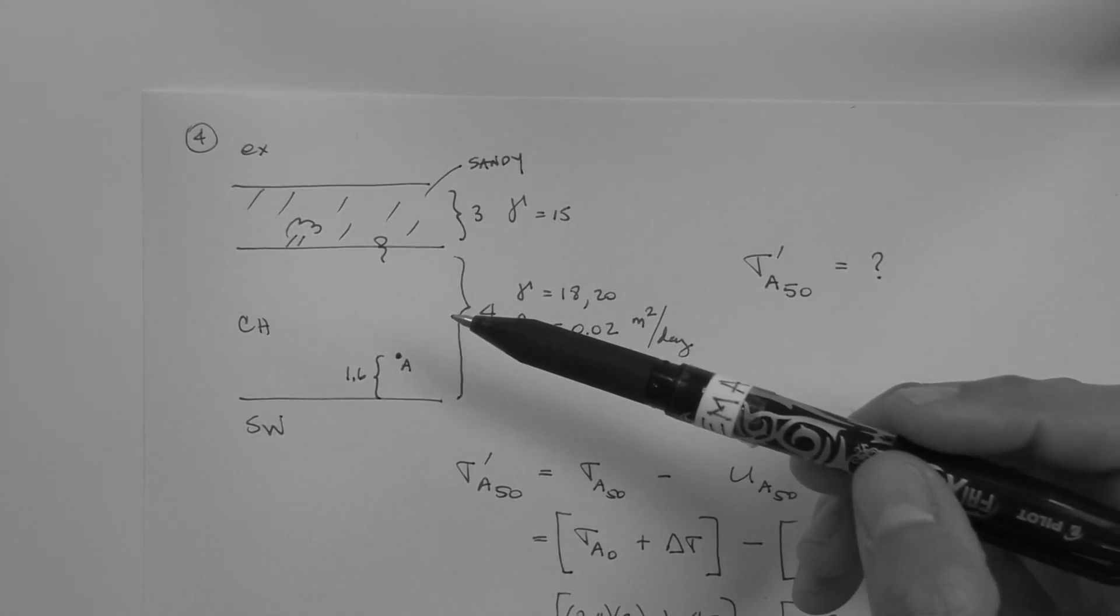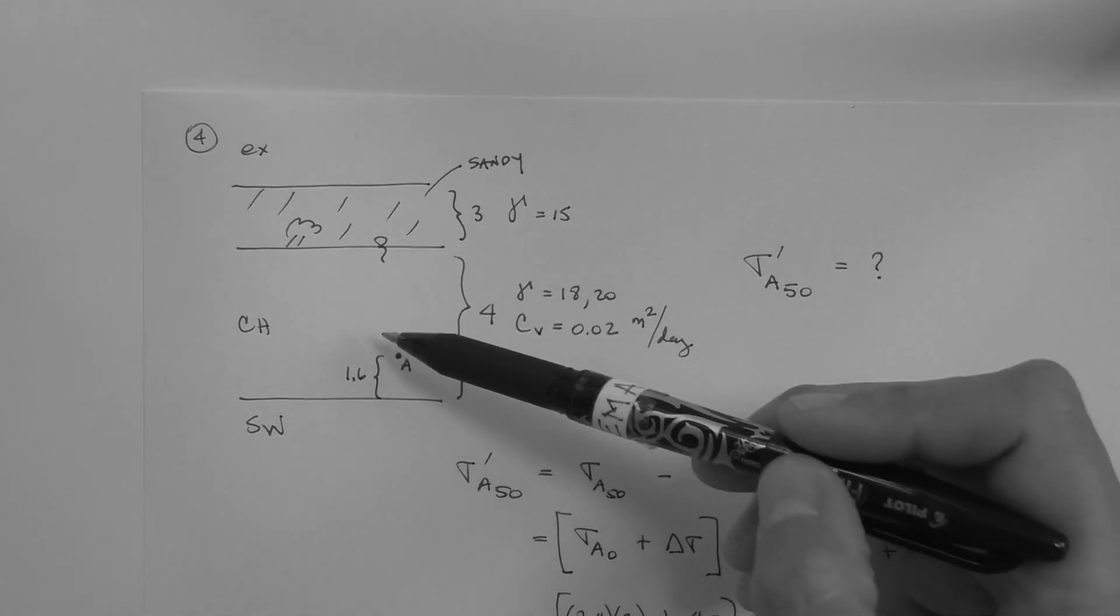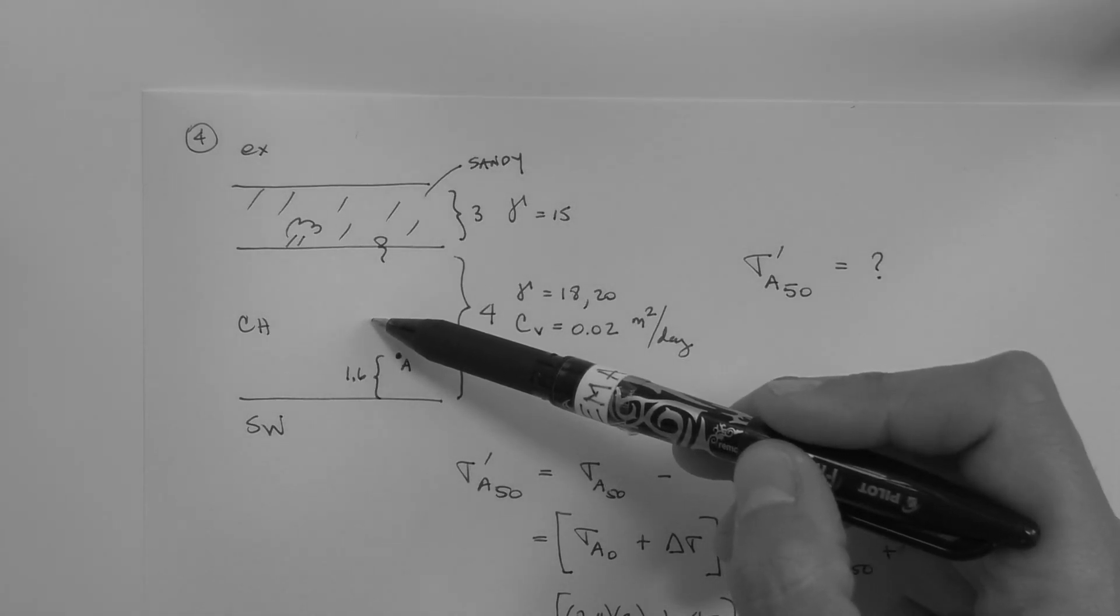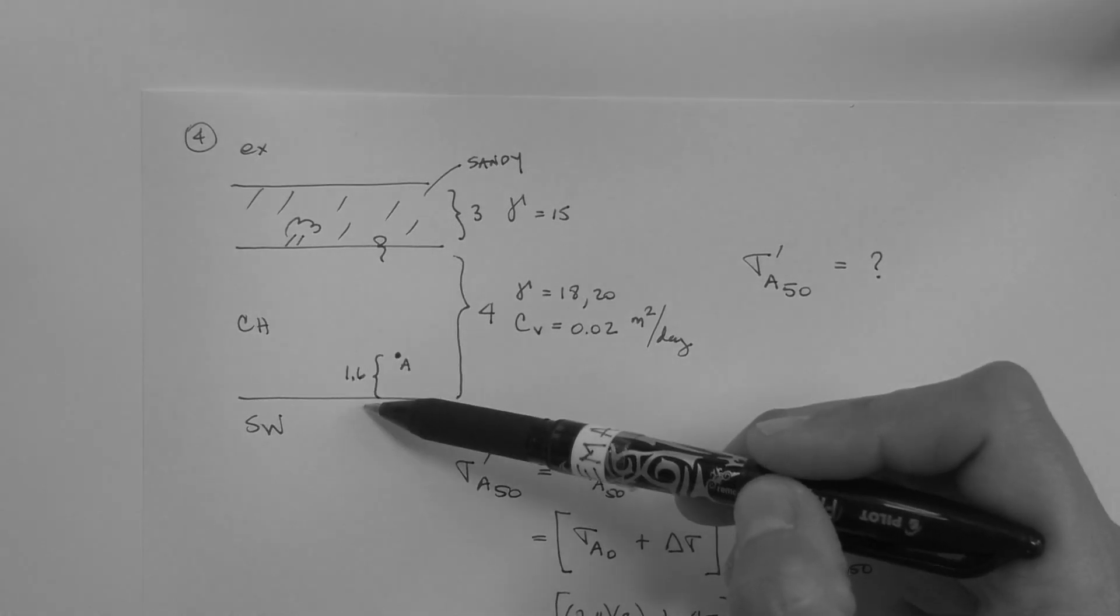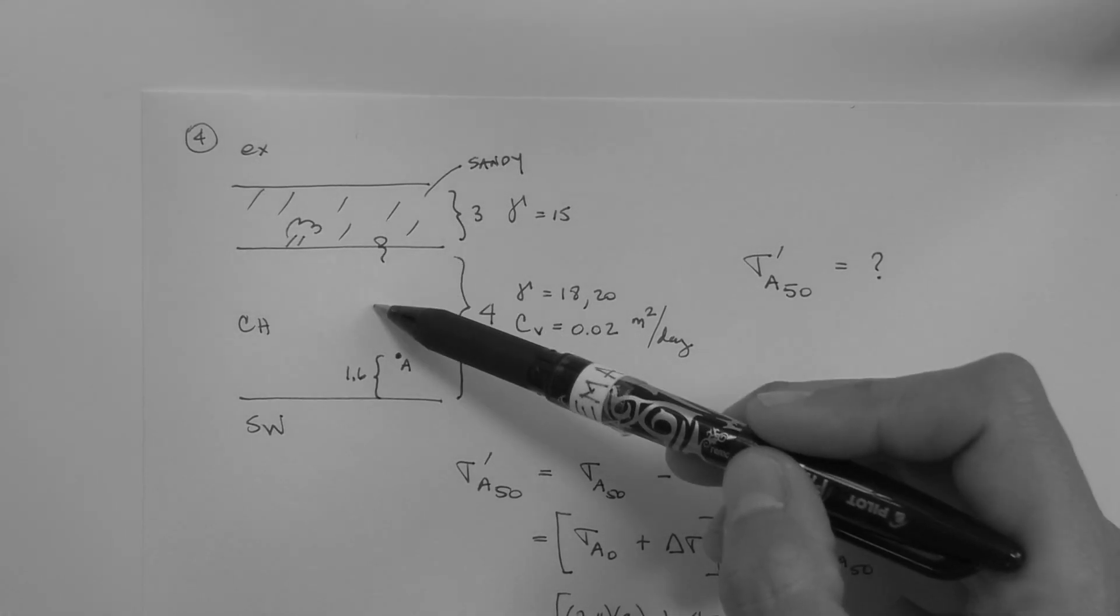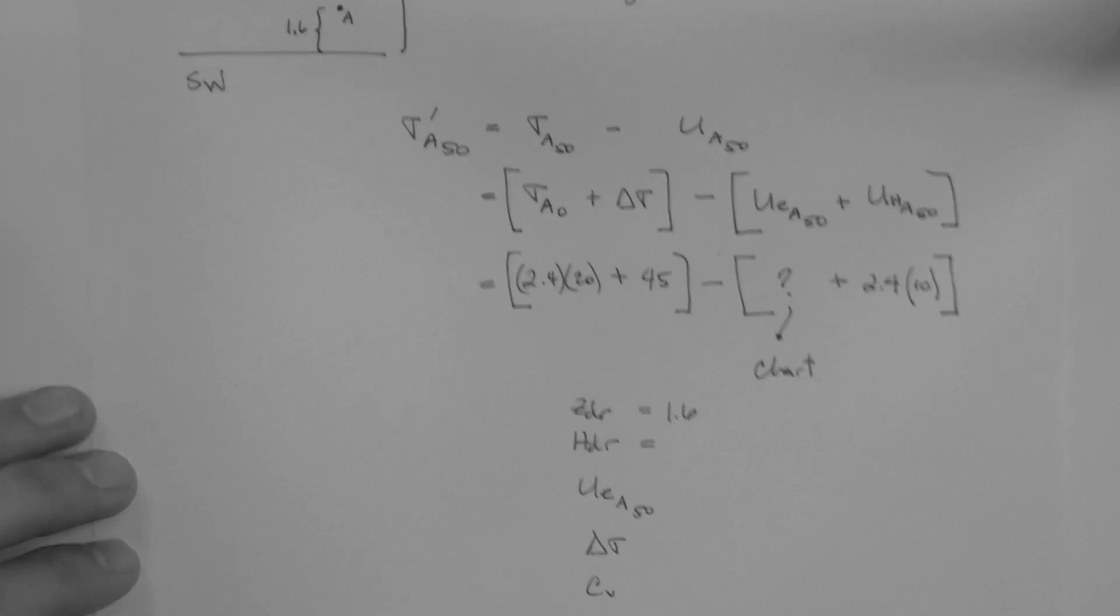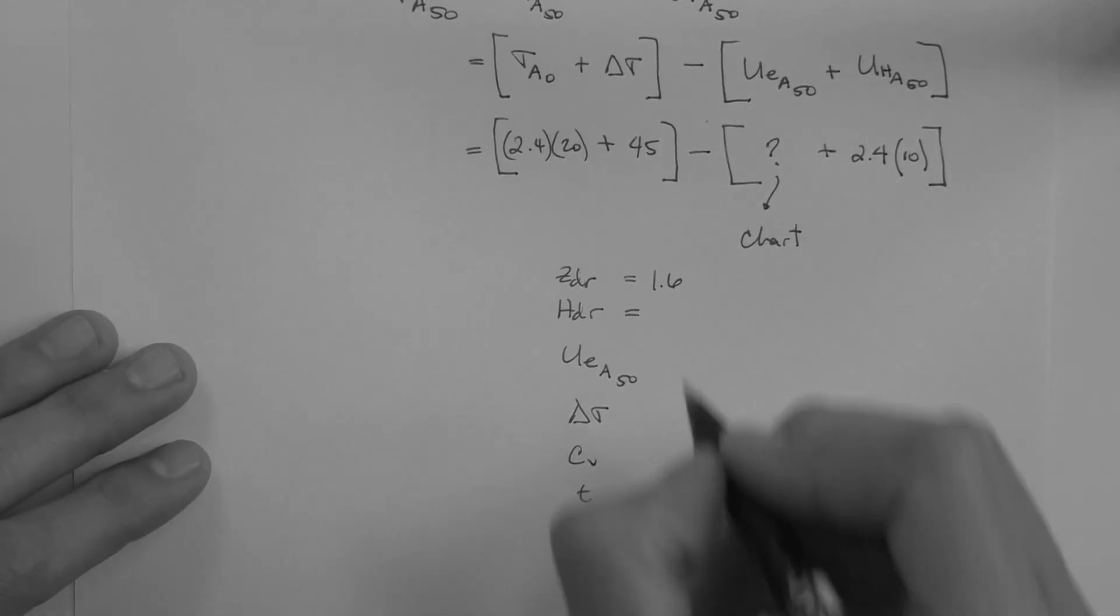HDR, longest drainage path. What's the worst place to be if you want to get out and your water molecule? For this problem, the middle, because you would want to, or have to, swim all the way up or all the way down from the center. HDR is 2, half of the layer's thickness, 2 meters.